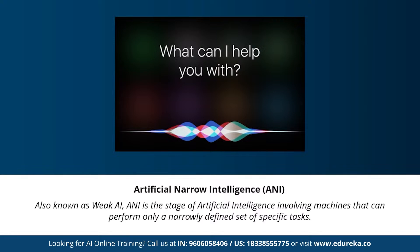Artificial narrow intelligence, also known as weak AI, is the stage involving machines that can perform only a narrowly defined set of specific tasks. At this stage, machines don't possess any thinking ability — they just perform predefined functions. Examples of weak AI include Siri, Alexa, AlphaGo, Sophia, and self-driving cars. Almost all AI-based systems built to date fall under weak AI or artificial narrow intelligence.